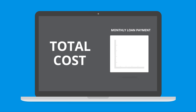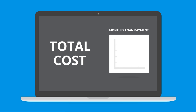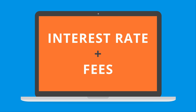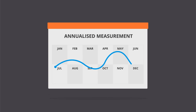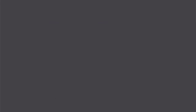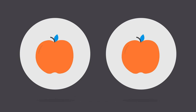While interest rate is what your monthly loan payments are calculated on, the APR takes into consideration the interest that you're going to pay over the life of the loan, plus any fees associated with obtaining that loan. All of these factors are combined into an annualized measurement, helping you compare apples with apples.